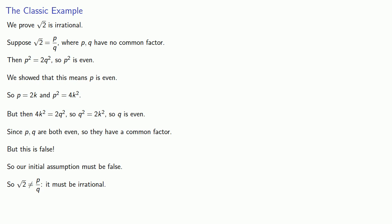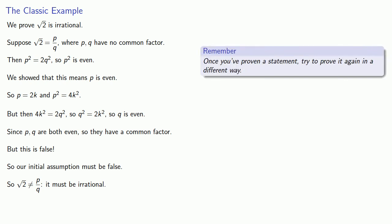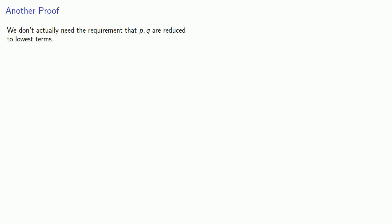Now there is a second way that our assumption can give, which is: maybe it's not true that p and q have no common factor. This leads to a very important idea: once you've proven a statement, try to prove it again in a different way. Part of the reason is that this gives you additional practice in proving statements — proof is a way of studying mathematics, reminding yourself what you should know. The other reason is that proving something differently may allow you to discover something you hadn't known about mathematics. Proof is a way of creating or discovering more mathematics.